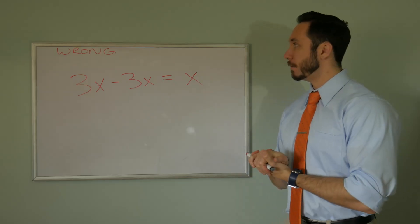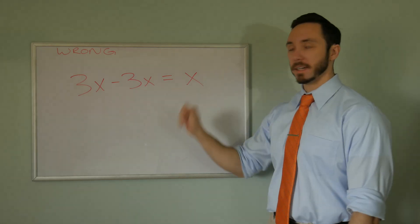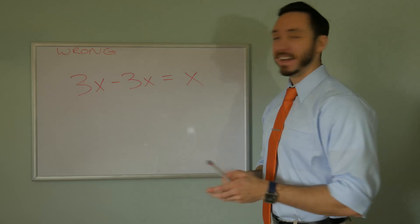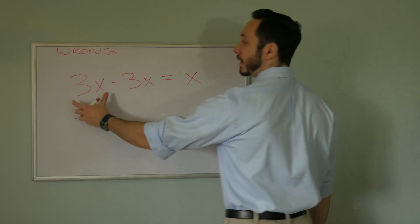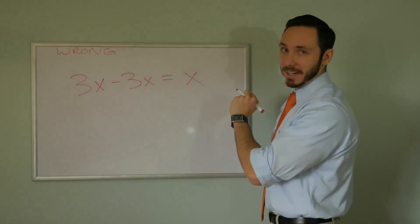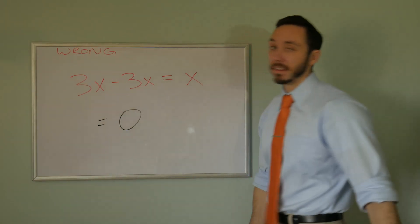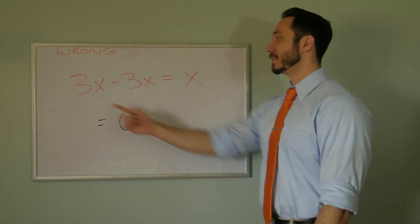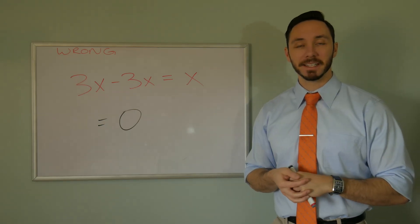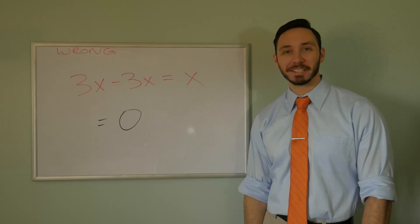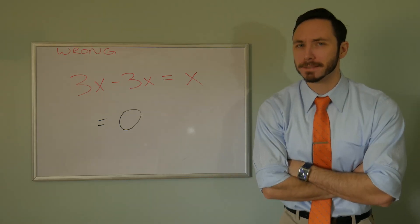Here's another mistake I see all the time: a lot of kids will write three x minus three x is equal to x, thinking the threes go away. Not quite. Just think of x as dogs — if you have three dogs minus three dogs, how many dogs do you have? Zero dogs. So this should just cancel and equal zero, not x. Kids will just cancel out the threes and leave the x there. My question for you: what animal should we sacrifice for this one? That is all I have for this video — I'm going to continue to math on, I hope you do the same. I'll see you in the next video.